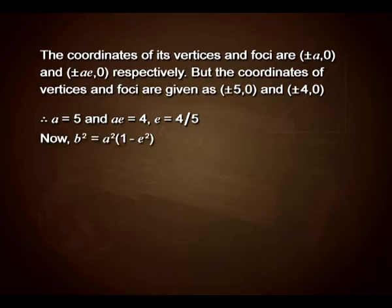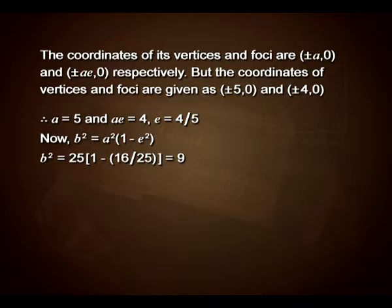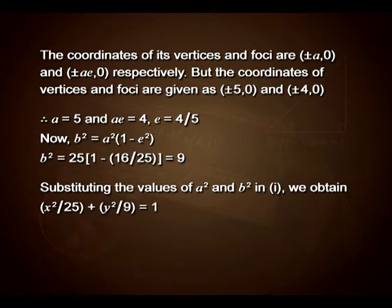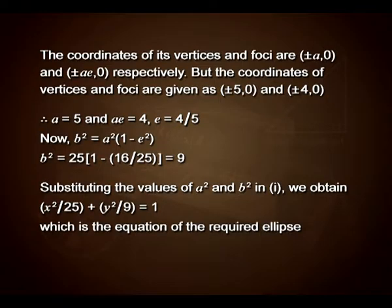Now, b² equals a² into 1 minus e². So b² equals 25 into 1 minus 16 upon 25, which on simplification gives us 9. Substituting the values of a² and b² in equation 1, we obtain x² upon 25 plus y² upon 9 equals 1, which is the equation of the required ellipse.